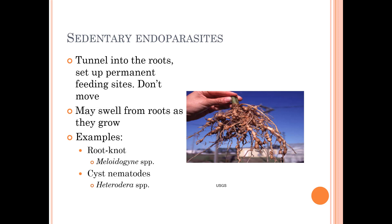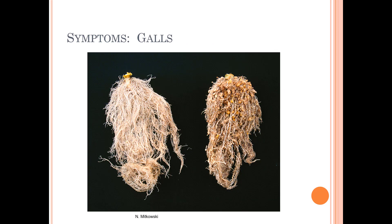Sedentary endoparasites tunnel into the roots and set up permanent feeding sites — they don't move. They may swell out from the roots as they grow. The two most common are root-knot nematodes and cyst nematodes. On the left, we have a lettuce cultivar 'Salinas' that is resistant to root-knot nematode; on the right, 'Ithaca,' which is susceptible — you can see healthy roots on the left and nodules or galls on the right.